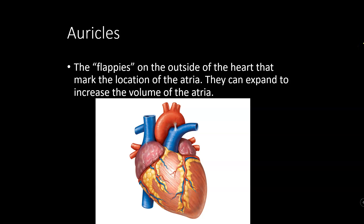Whenever you get your heart out in the A&P lab, there are these little flappy things on the superior aspect of the heart called auricles. Essentially the atria are like deflated balloons — the auricles are the deflated little flappy parts that allow the atria to fill up with blood, and they help you figure out where the atria are going to be.